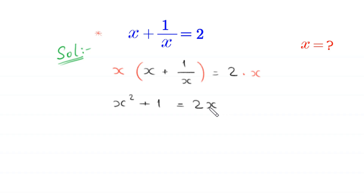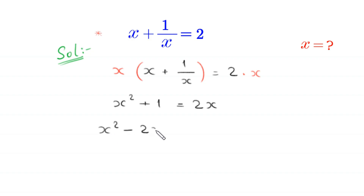Now, we move this 2x to the left hand side. Then this equation will become x squared minus 2 times x plus 1 is equal to 0.